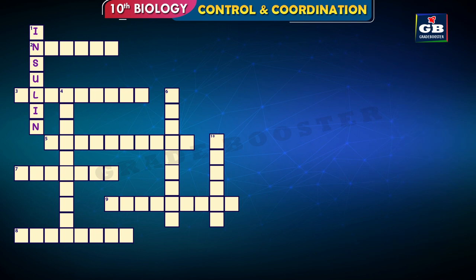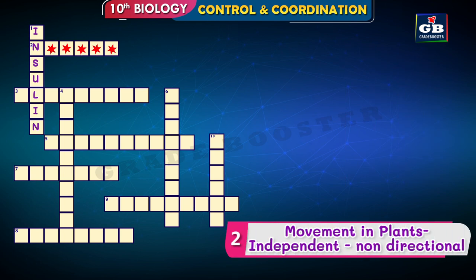Now let us see the second one. Second across — movement in plants, independent, non-directional. The hints are: movements in plants, independent, non-directional. You have to decode the answer from the hints.